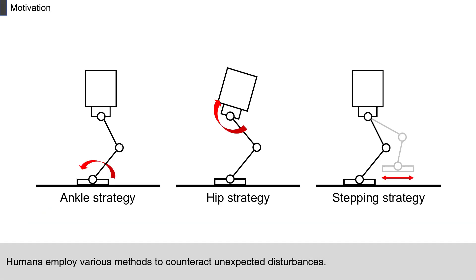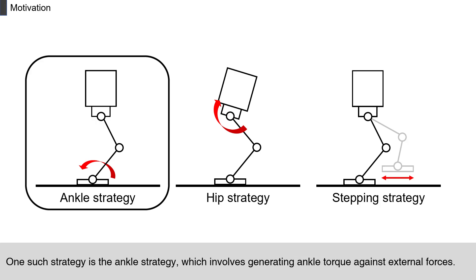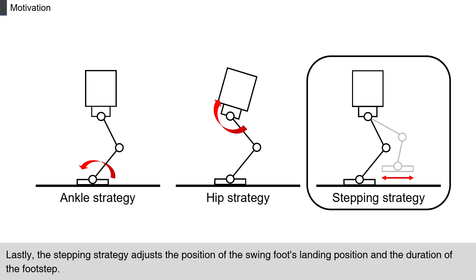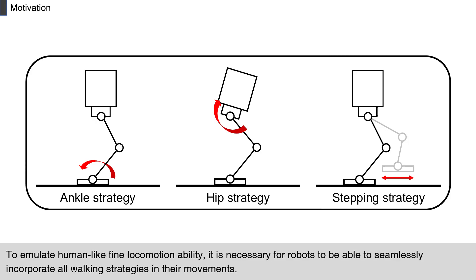Humans employ various methods to counteract unexpected disturbances. One such strategy is the ankle strategy, which involves generating ankle torque against external forces. Additionally, the hip strategy creates counter-momentum concerning the robot's body angular acceleration. Lastly, the stepping strategy adjusts the position of the swing foot's landing position and the duration of the footstep. To emulate human-like fine locomotion ability, it is necessary for robots to be able to seamlessly incorporate all walking strategies in their movements.